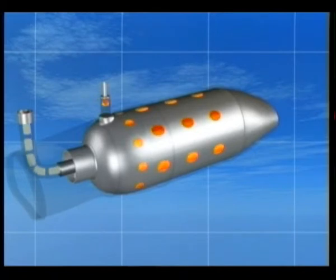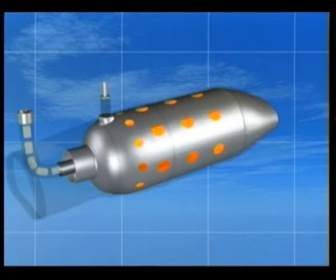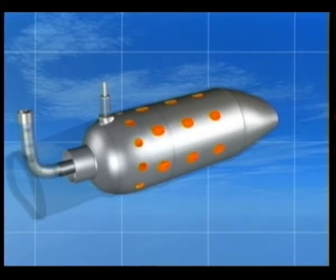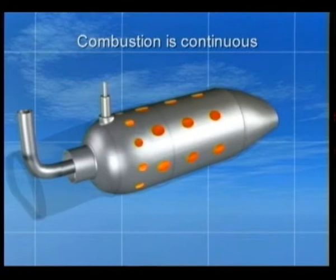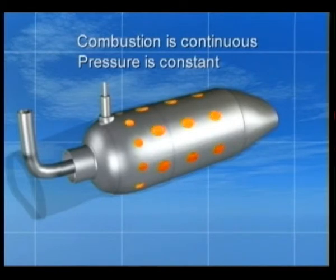On completion of the starting cycle, the igniters are cut off. At this stage we can say that we have light up. From this point, combustion is continuous and the pressure in the combustion chamber for a given fuel flow is constant.